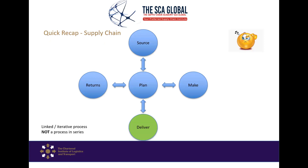Everything starts off with a plan. You may have a bottle of water or a chocolate bar on your desk — remember that chocolate did not appear there randomly. It appeared because of the aspects of the supply chain. The manufacturer had to plan, looking at what the demand for that chocolate was.